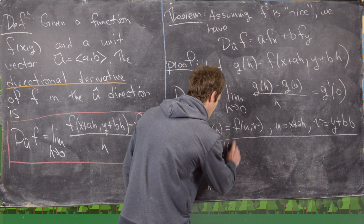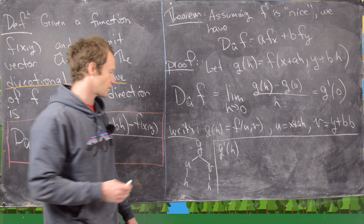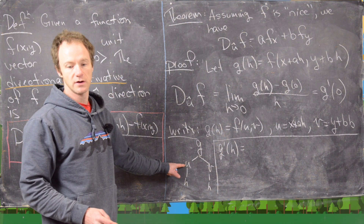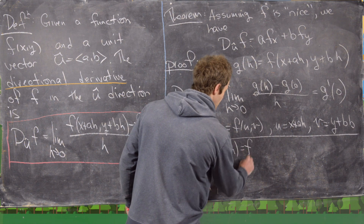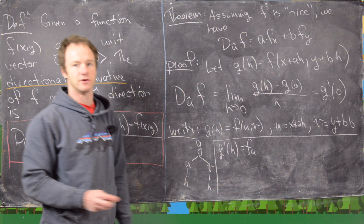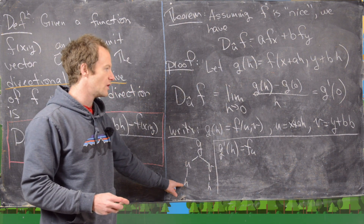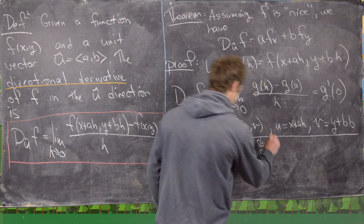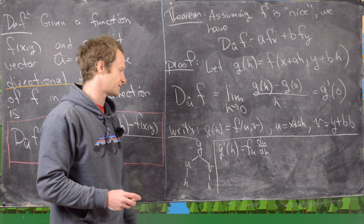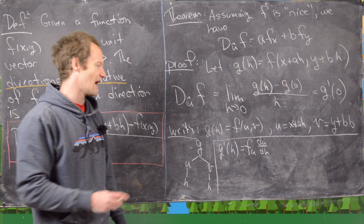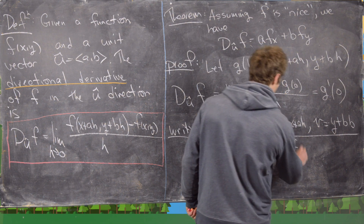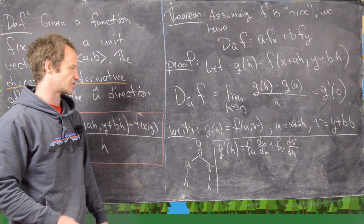Applying the chain rule, g prime of h equals the partial derivative of f with respect to u times du/dh, plus the partial derivative of f with respect to v times dv/dh — one term down each branch of the variable-dependence tree.